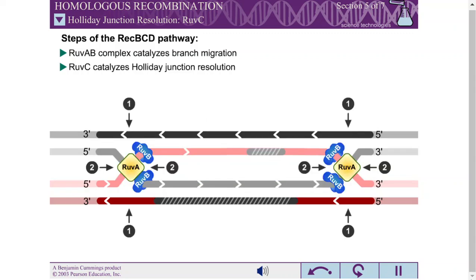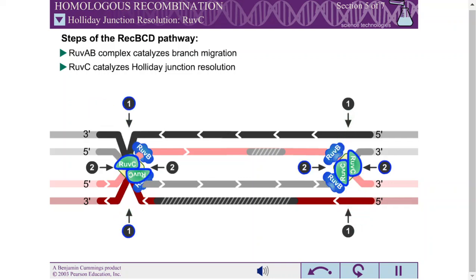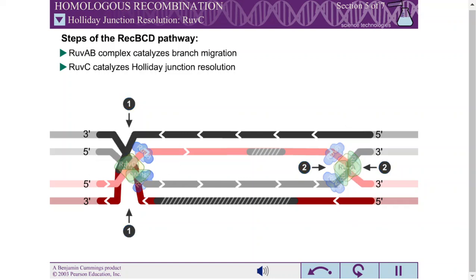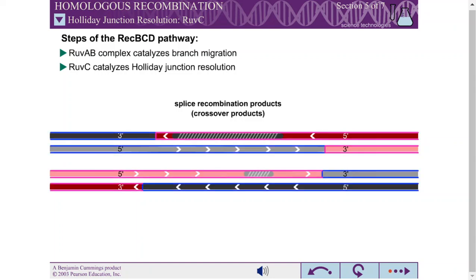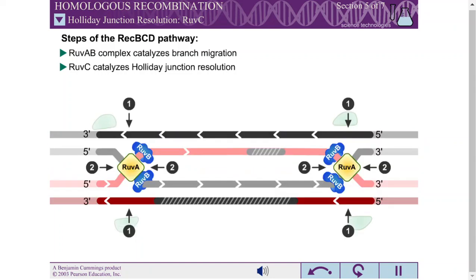If the junctions are cleaved at different sites, splice recombination products result. For example, if the first junction is cleaved at Site 1 and the second junction is cleaved at Site 2, splice recombination products result. Splice recombination products also result if the first junction is cleaved at Site 2 and the second junction is cleaved at Site 1.